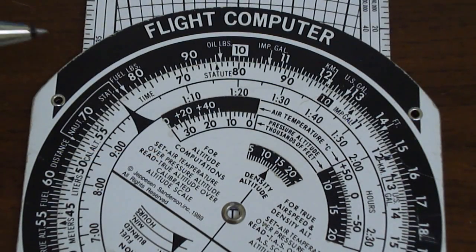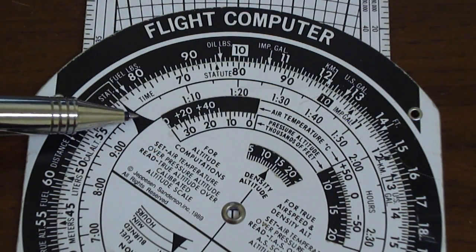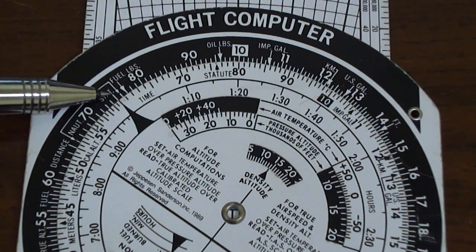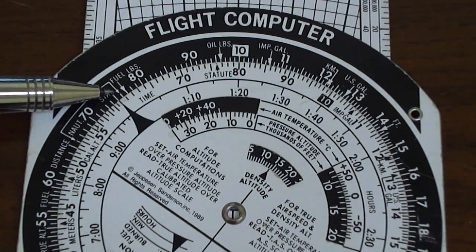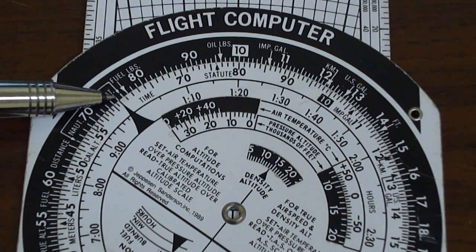In order to solve this problem, what we'll first do is align the index on the inside rotating ring with the climb speed that we are going to establish. For a Cessna 172, I've selected in this example 75 knots.